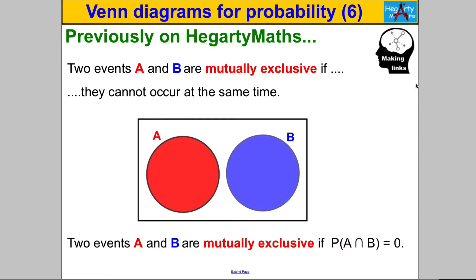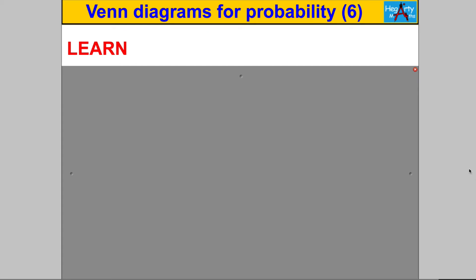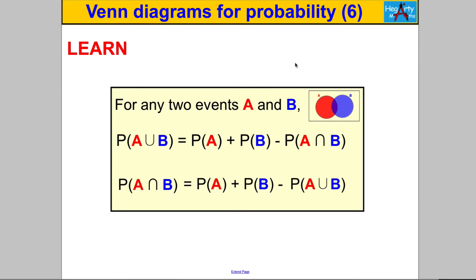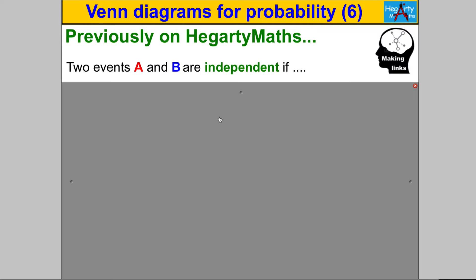That result there is something you must remember. Next, I asked you in the last video to learn a result: for any two events A and B, the probability of A or B is the probability of A plus the probability of B minus the probability of A and B. You need to be familiar with that rearrangement too, and the last thing is to remember what it means if two events are independent.